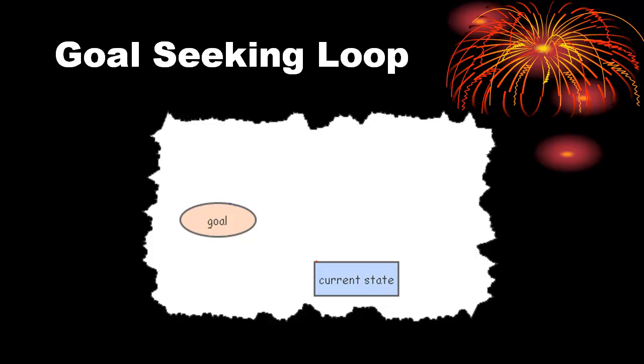The other type of loop is a goal-seeking loop, also sometimes referred to as a balancing loop. Consider any situation where we have some current state and a desired goal. The current state is something that won't change rapidly and will remain what it is even if time is stopped.